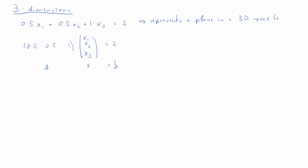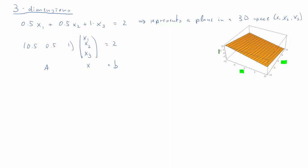As we go into three-dimensional space, we have three coordinates. Looking at this graphically: here we have a plane in a 3D system with X1, X2, and X3 on the axes. Our one equation represents all the points on this plane — it's a plane because we have a linear equation. Solving for X3 on the vertical axis, we get X3 = 2 minus one-half X1 minus one-half X2. So X3 is a function of X1 and X2 — a bivariate function — represented by the orange plane.